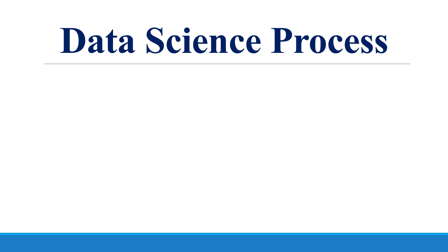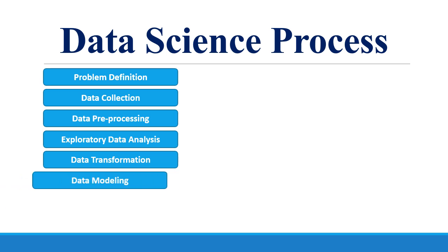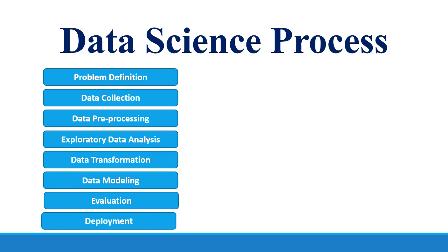Now let's talk about the data science process. The data science process comprises several stages: problem definition, data collection, data preprocessing, exploration and visualization, data transformation, data modeling, model evaluation, and deployment.